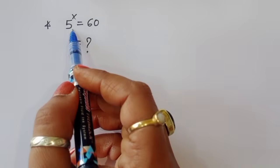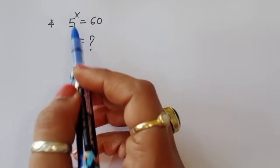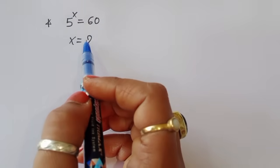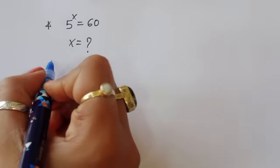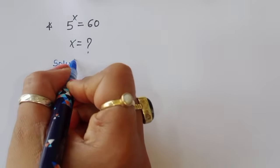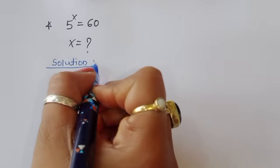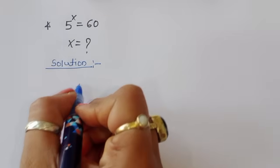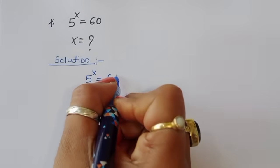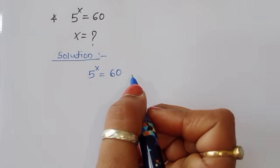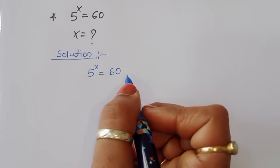The question is: given 5 power x is equal to 60, we have to find out the value of x. Let's see the solution.